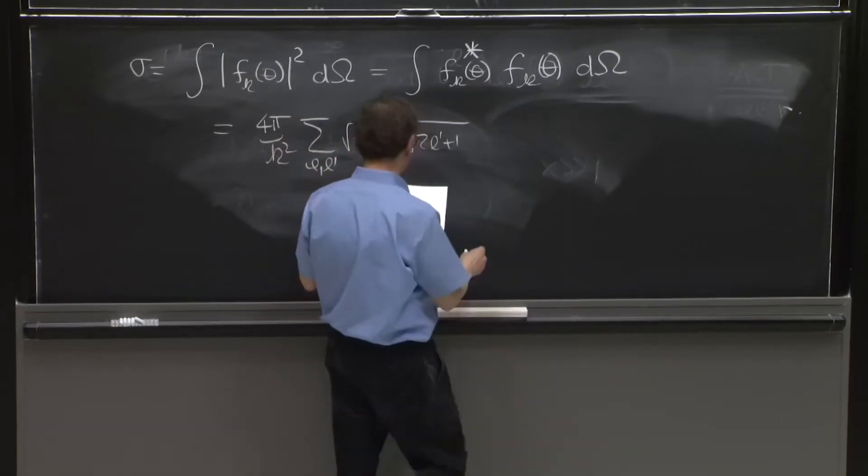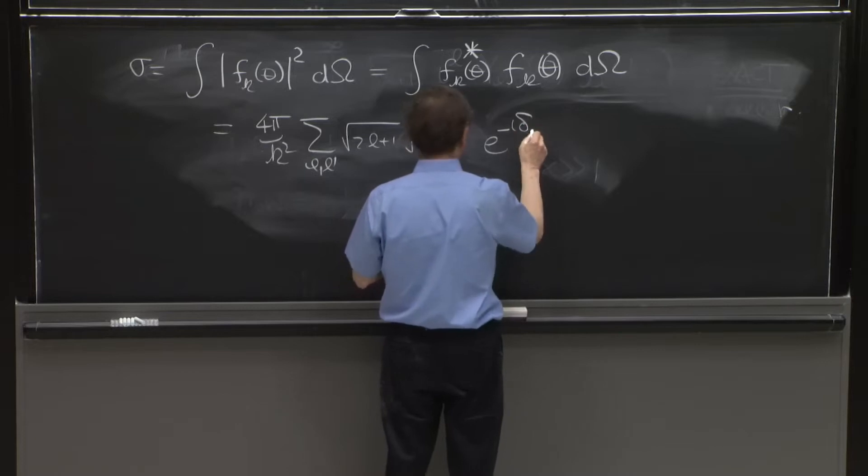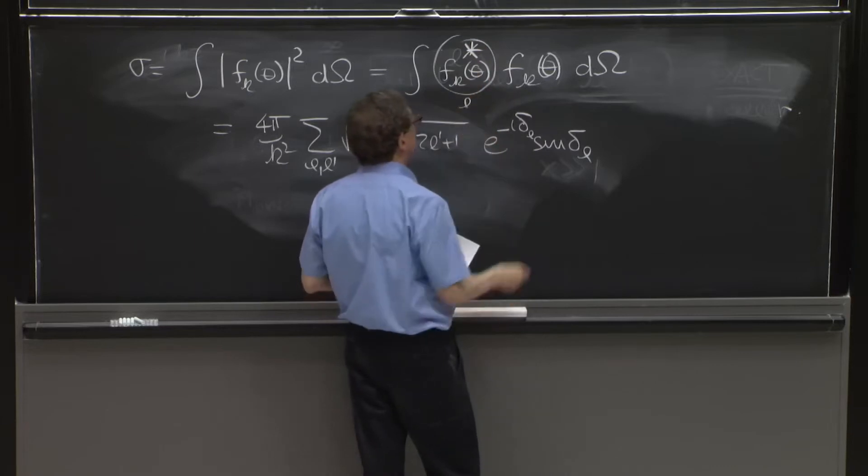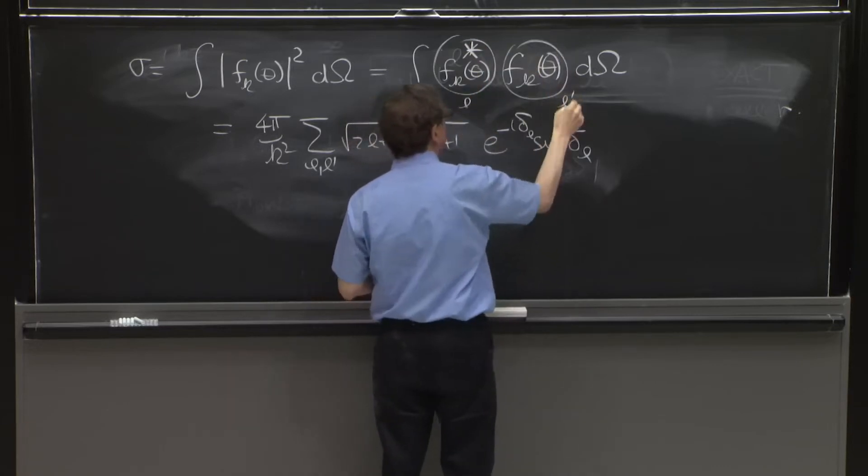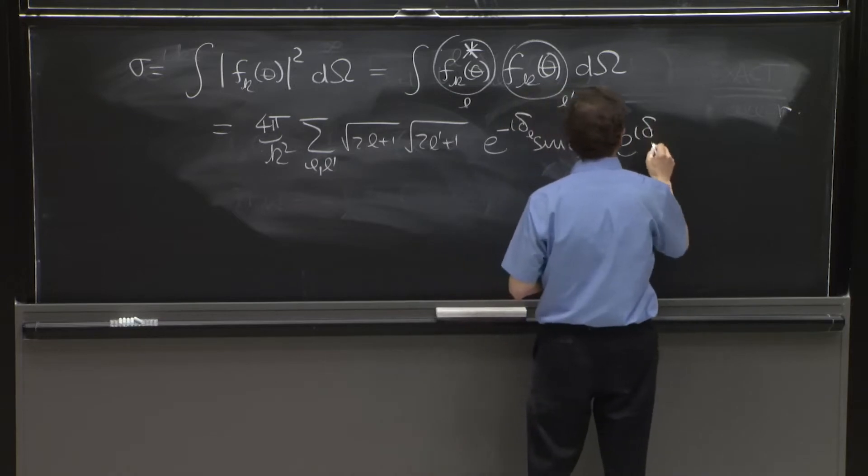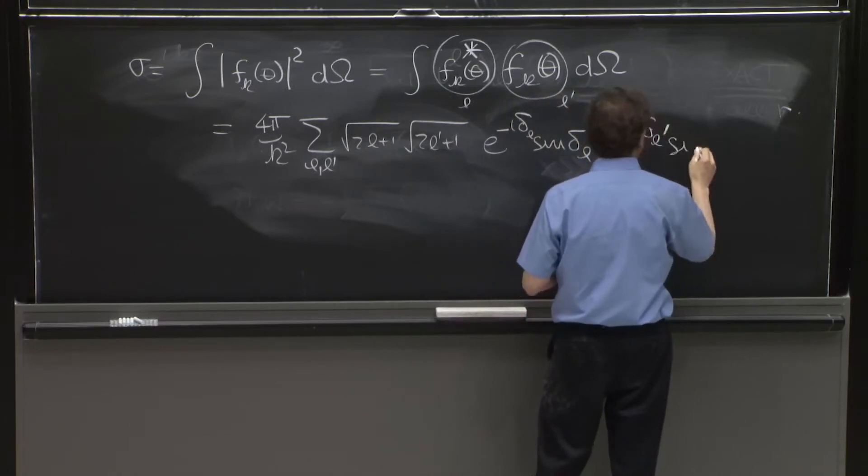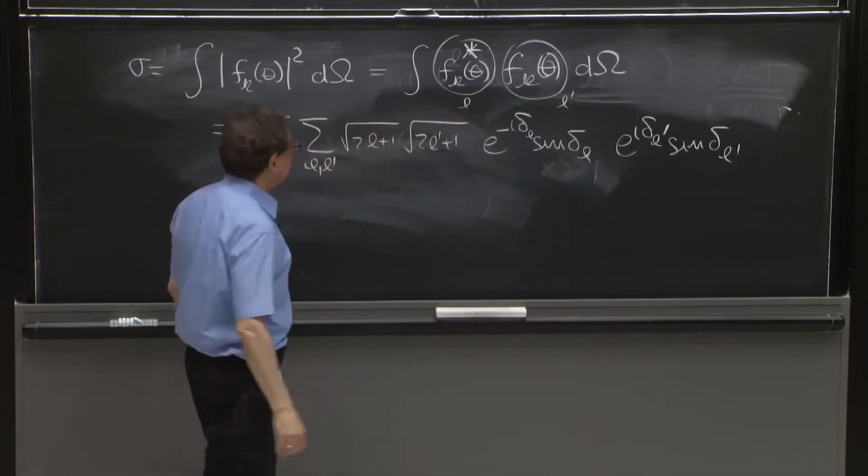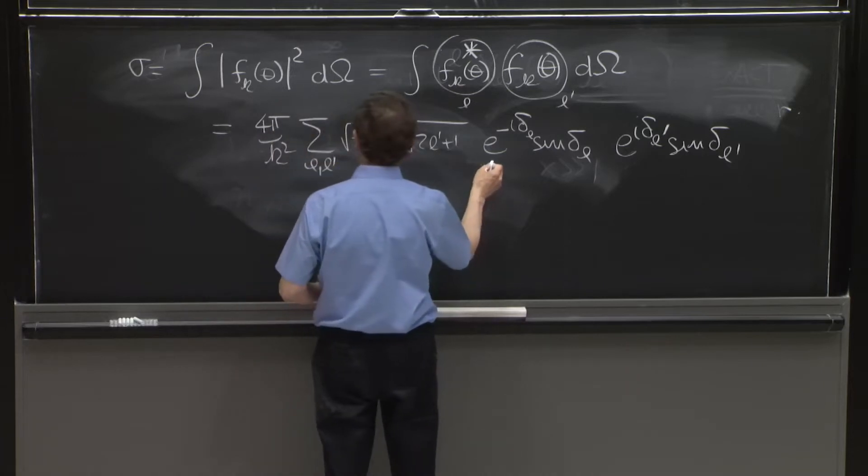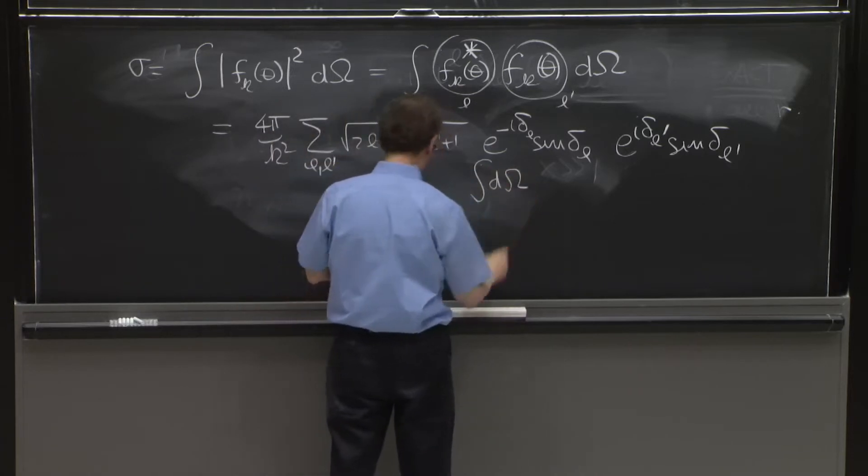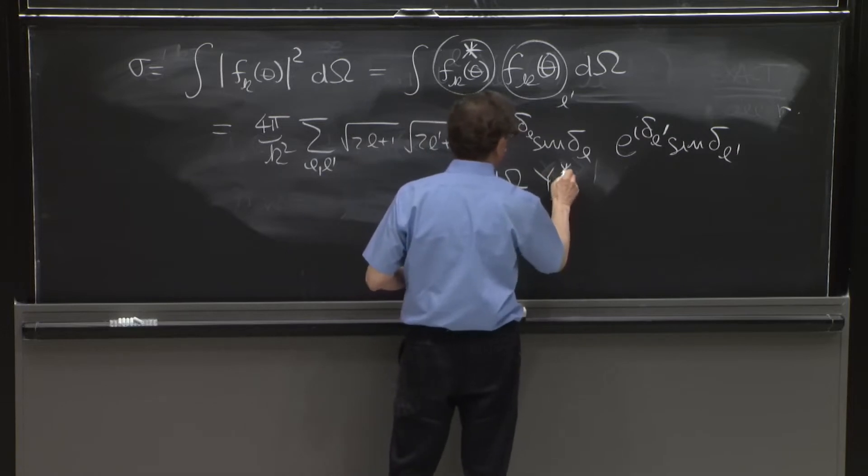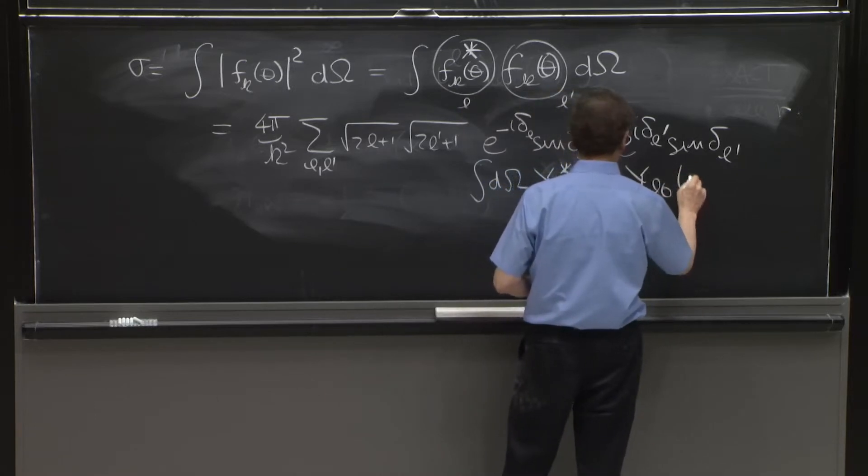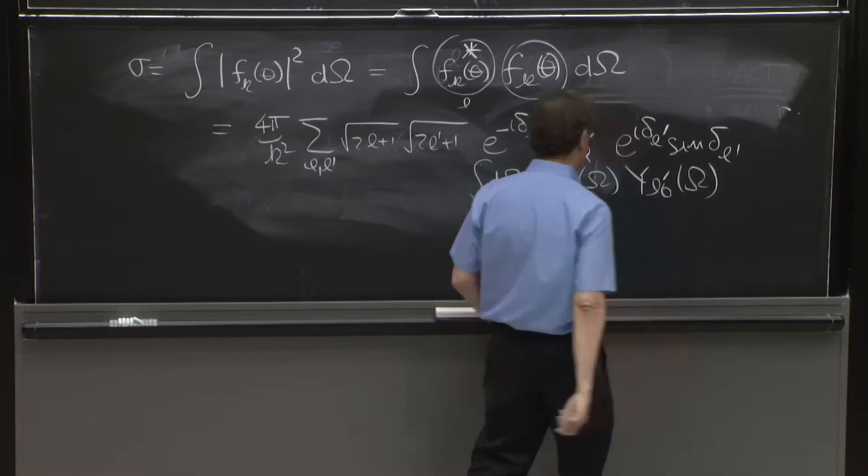So e to the minus i delta L sine of delta L. So I guess I'm using L for this one and L prime for that one. E to the i delta L prime sine of delta L prime. But happily, all that will not matter, because then you'll have the integral over solid angle of YL star 0 of omega, YL 0 of omega prime here.